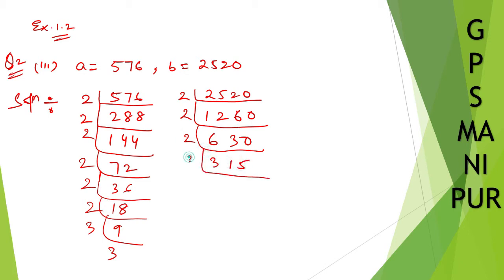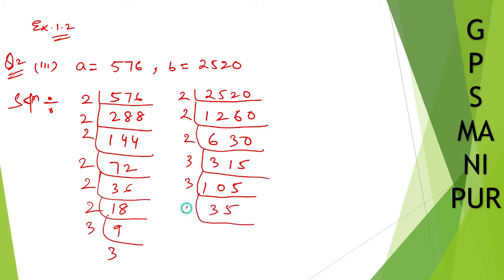Now divide by 3 — 3 into 3 is 9, 3 into 5 is 15. Divide by 3 again — 3 into 3 is 9, 3 into 5 is 15. Now divide by 5 — 5 into 7 is 35.